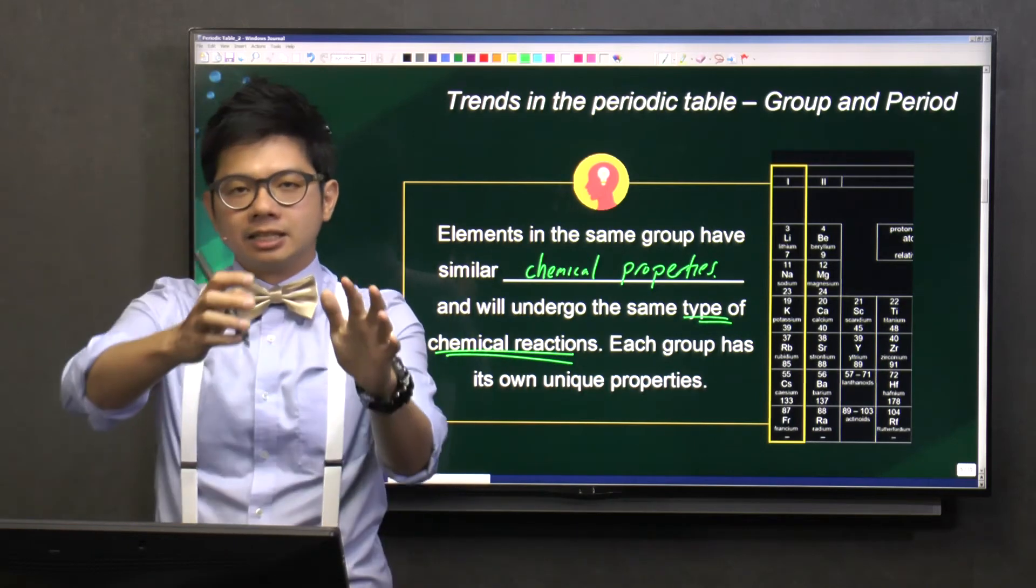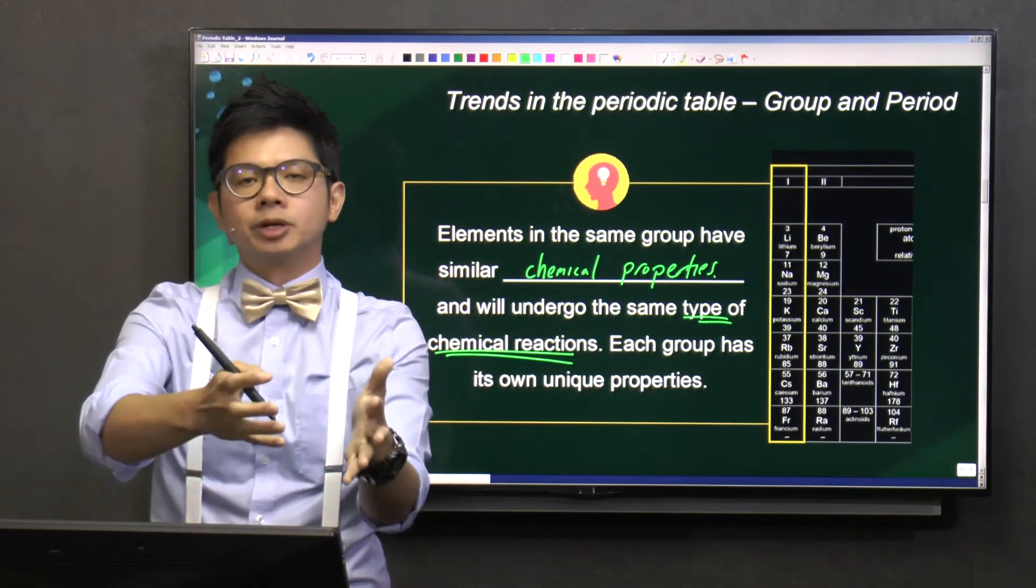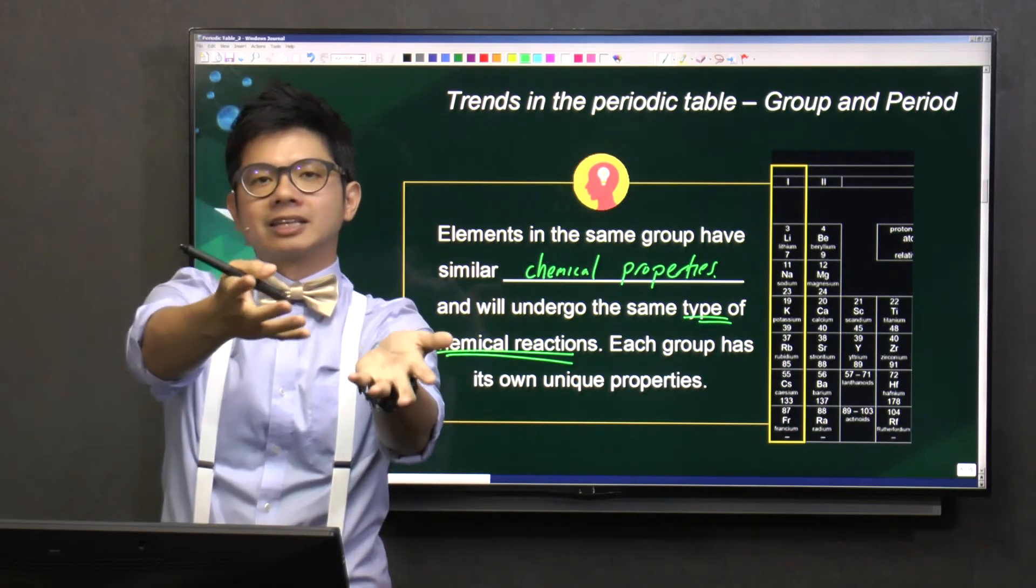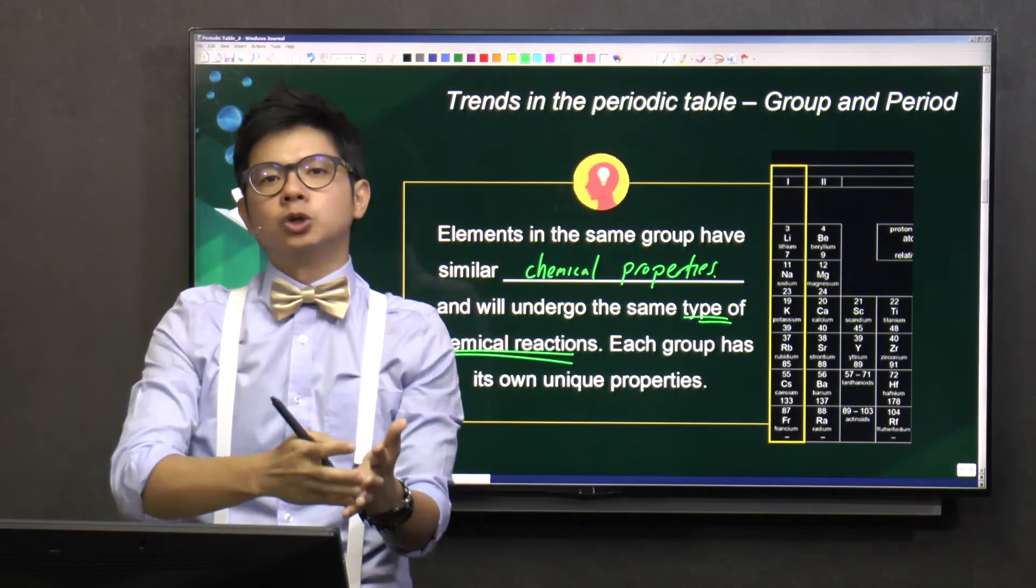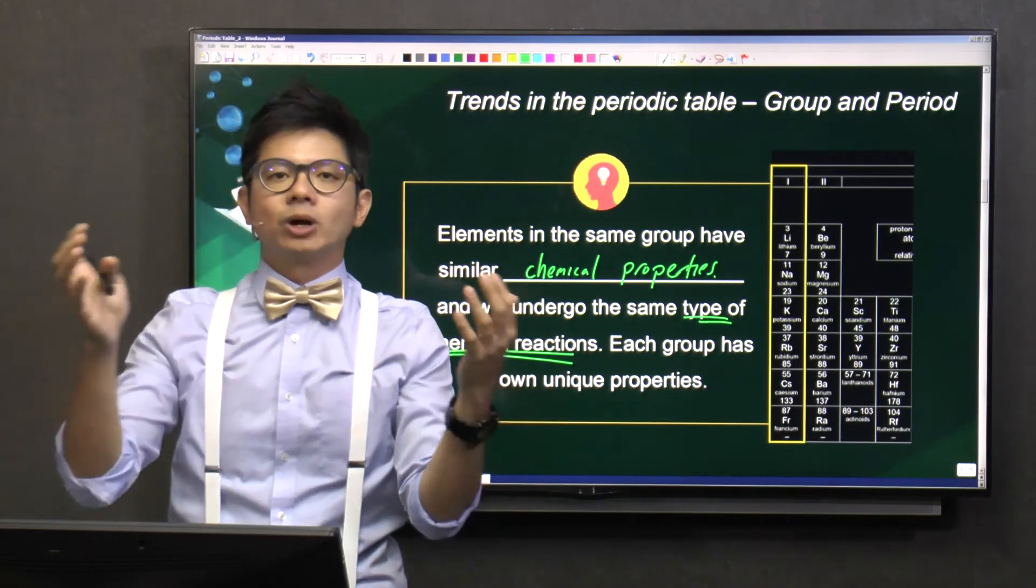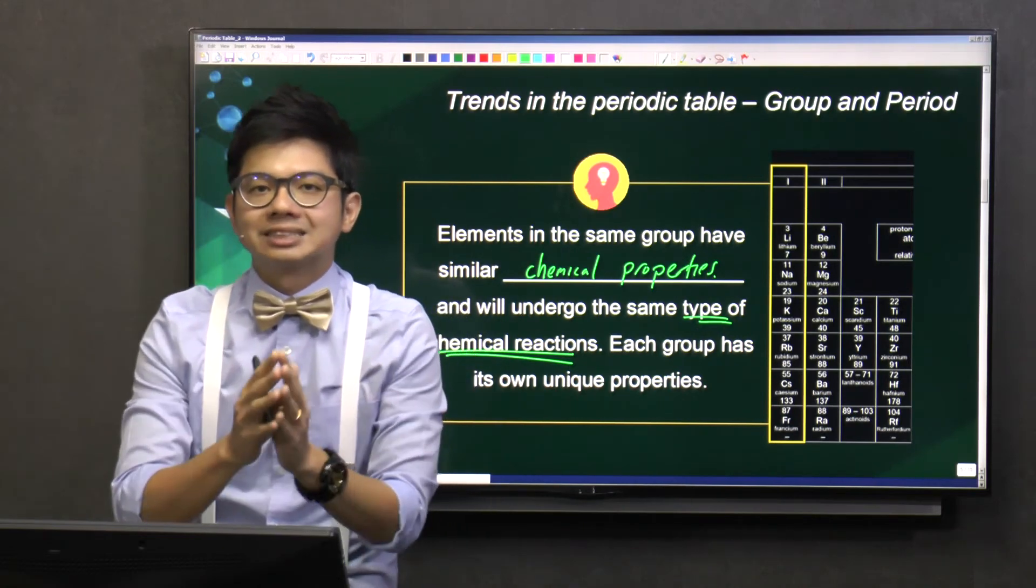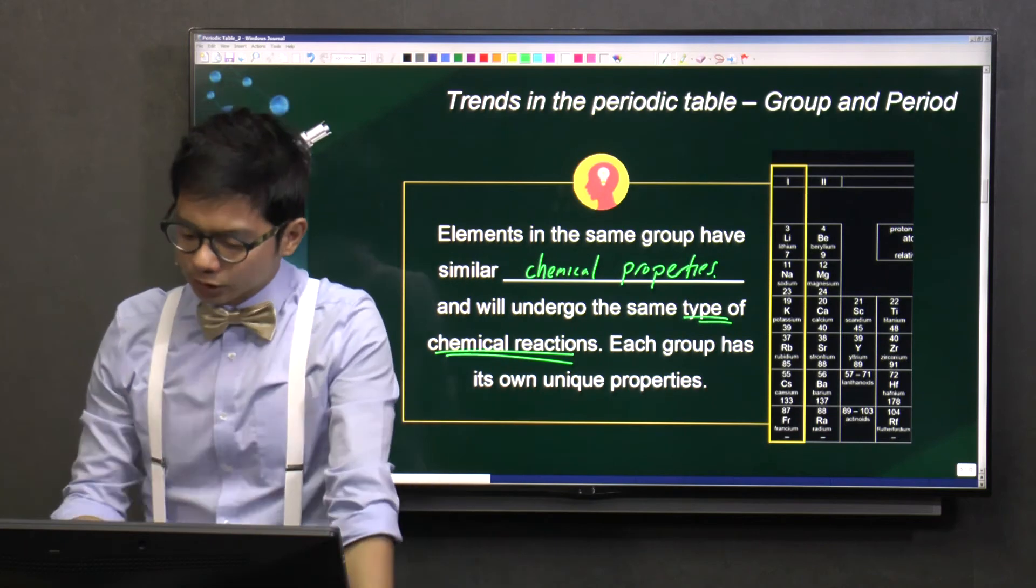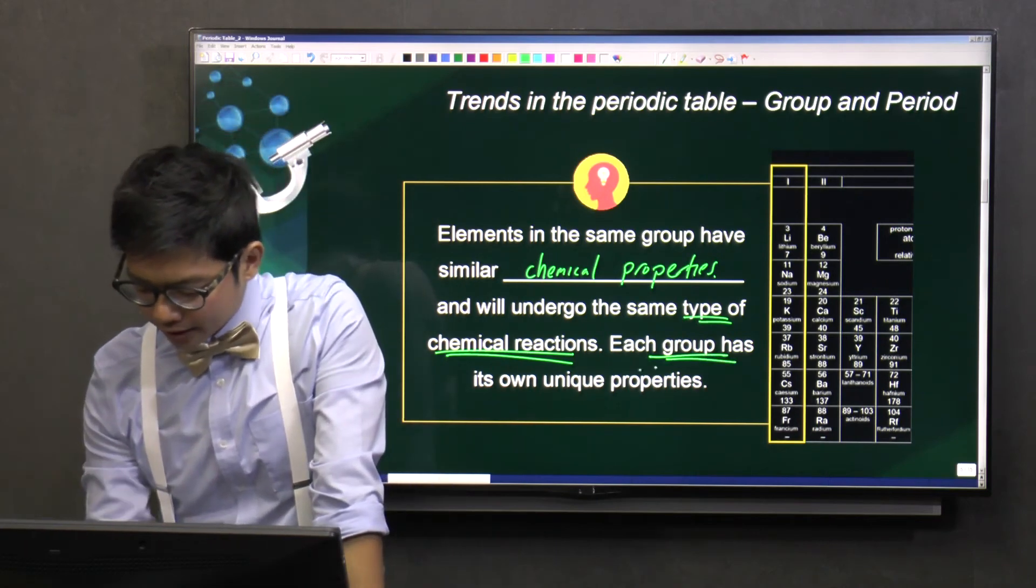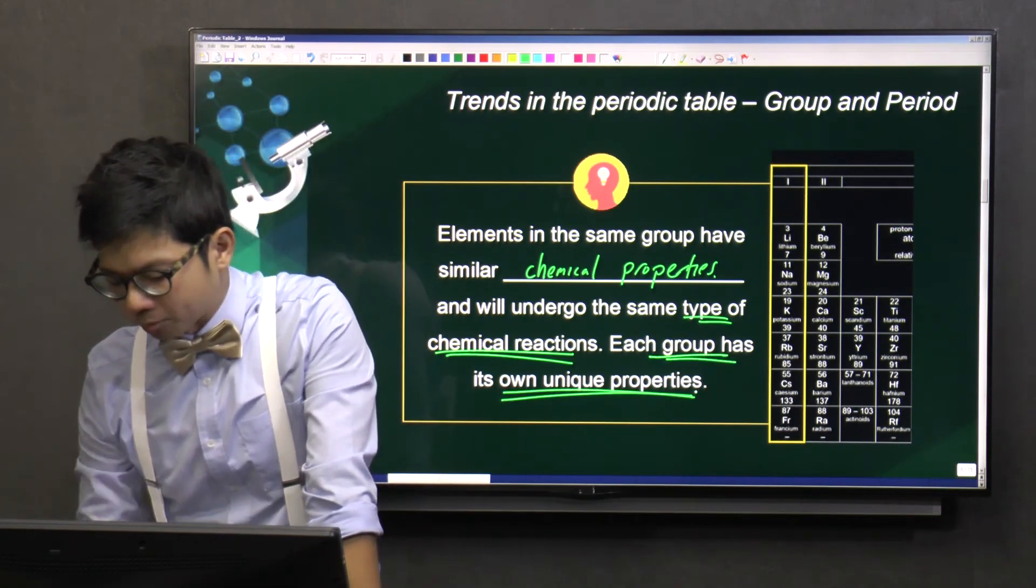And for example, if let's say this element in this group will react with acid, so you take the next element, it will also react with acid. This is what I meant by same chemical properties, so they will react the same way. And take note, each group, they have their own unique properties.